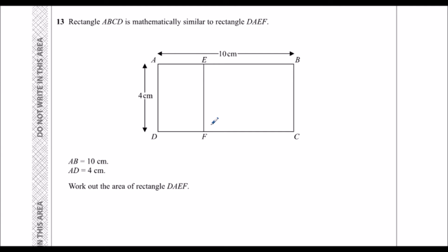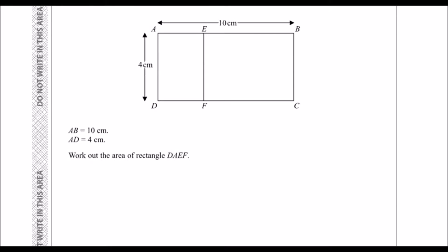So it might be useful to draw them out, one big rectangle, one little rectangle. So the little one is four along, and we don't know how far up, and the big one is ten along and four up.